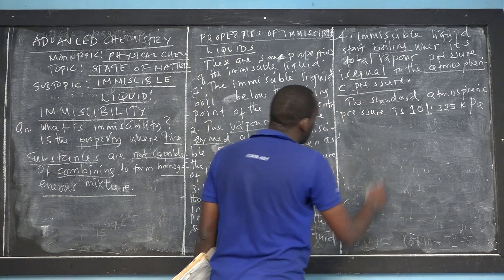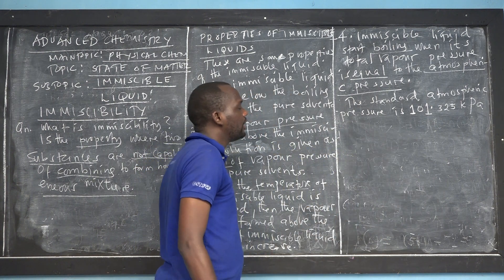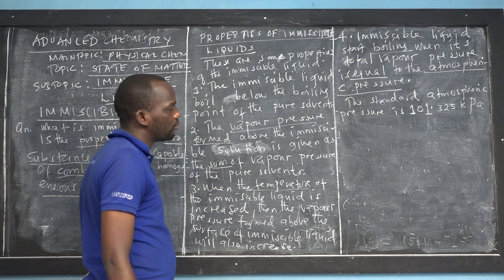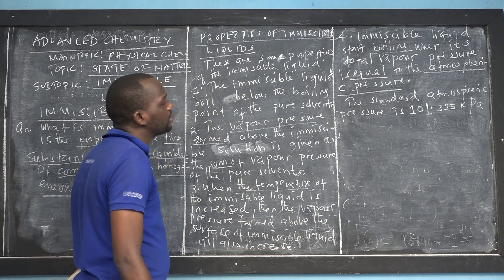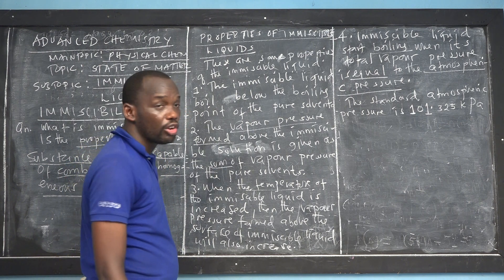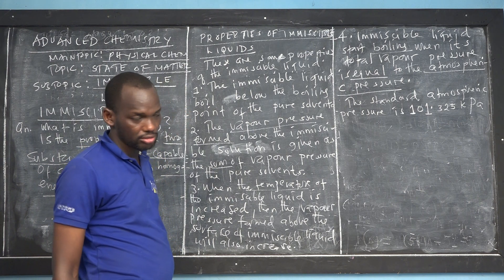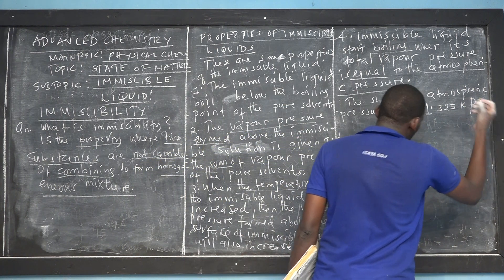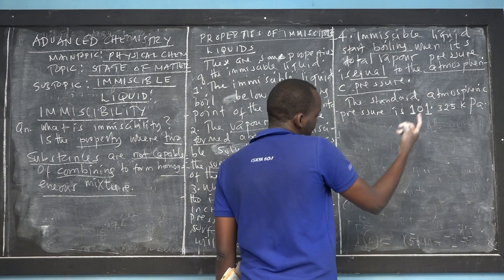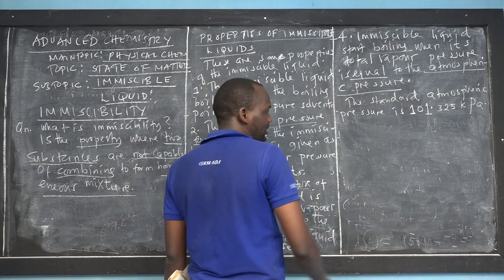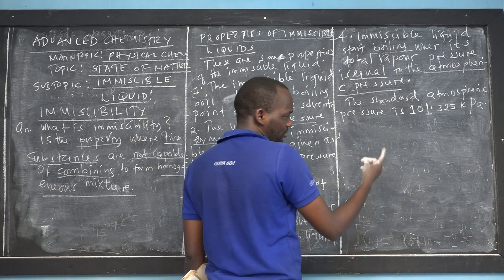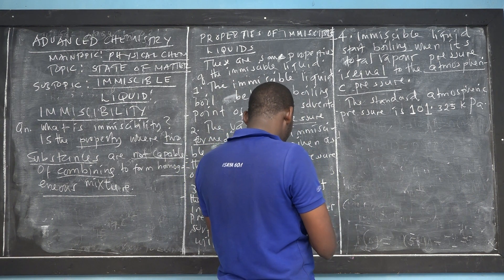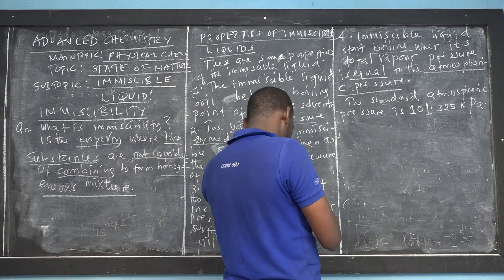So standard atmospheric pressure is actually 101.325 kilopascals. It's not newtons per meter — it means kilonewtons — but we don't have kilonewtons per meter. We just have the pascal, so that's why we call it like that.